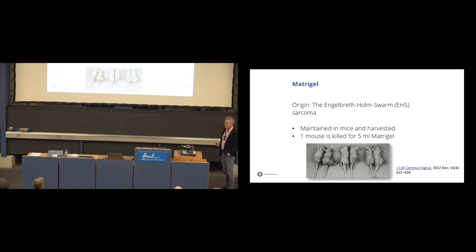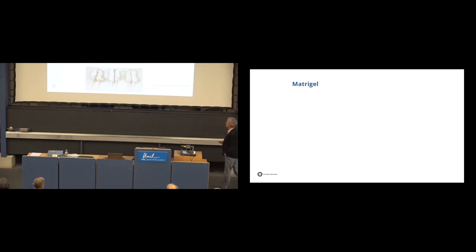For every 5 milliliter of Matrigel, one mouse is killed. So, you see already, when you claim that you are using organoids to replace animal experiments, and you do it in Matrigel, you're not replacing anything. You're still using animals. And there is a lot of suffering involved.